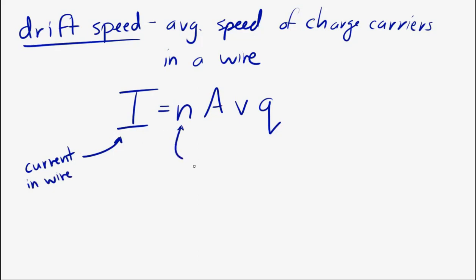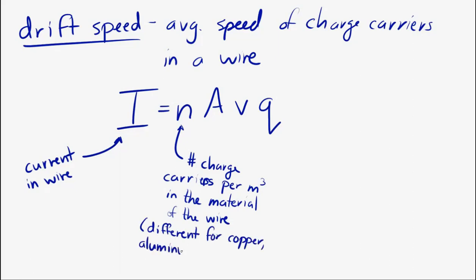n, that's the number of charge carriers per cubic meter in the material. So, the number of charge carriers per cubic meter in the material. It's also, it's kind of a density, right, because it's per cubic meter. It's number of charge carriers per cubic meter. That number right there is often given, because that depends on the type of material.